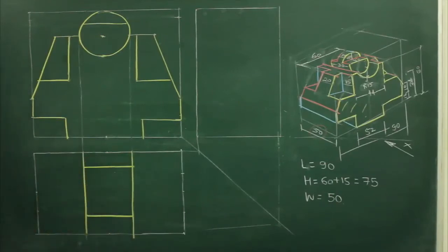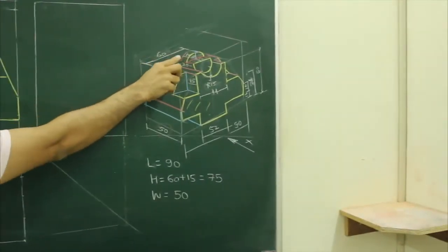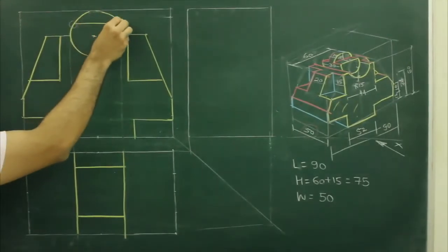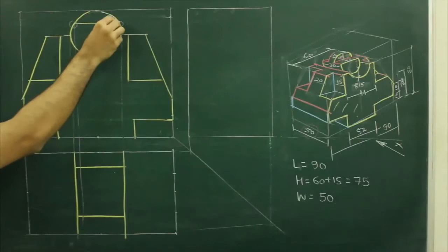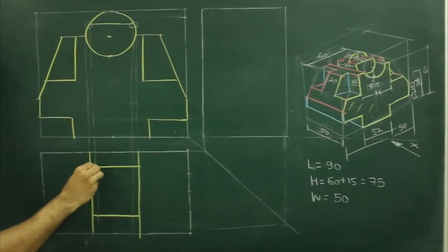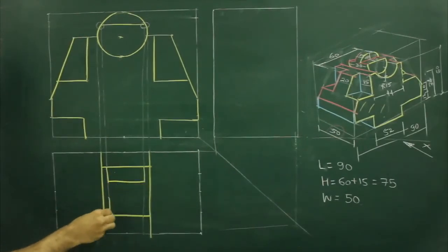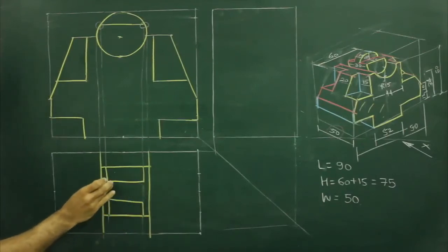After that, again if you see, they have given 10, 10, 10. So what we can do, from here we can project as it is, and take 10 from here and draw a line. Take 10 from here and draw a line. So we are done with the middle portion.